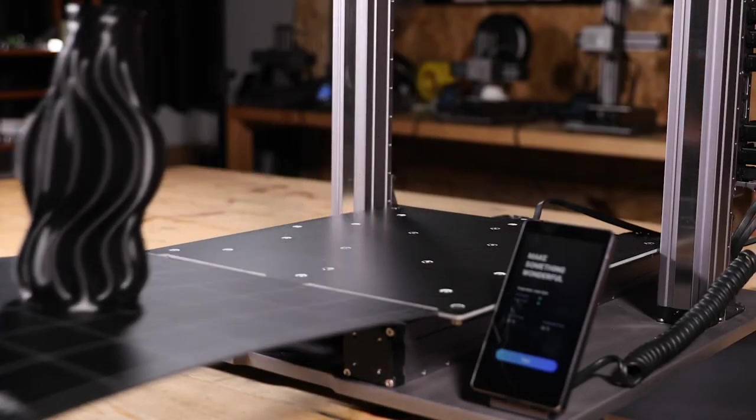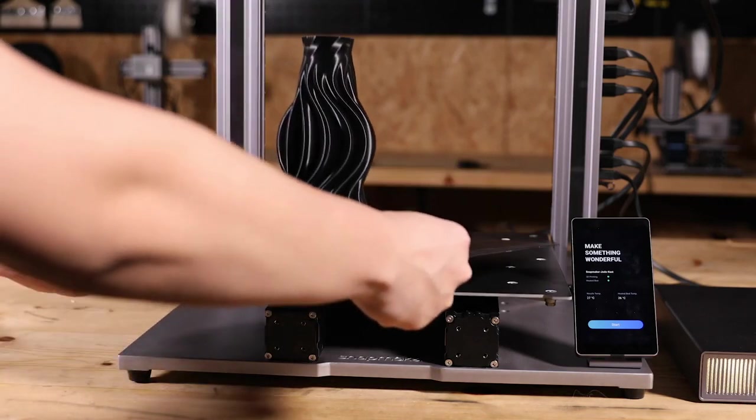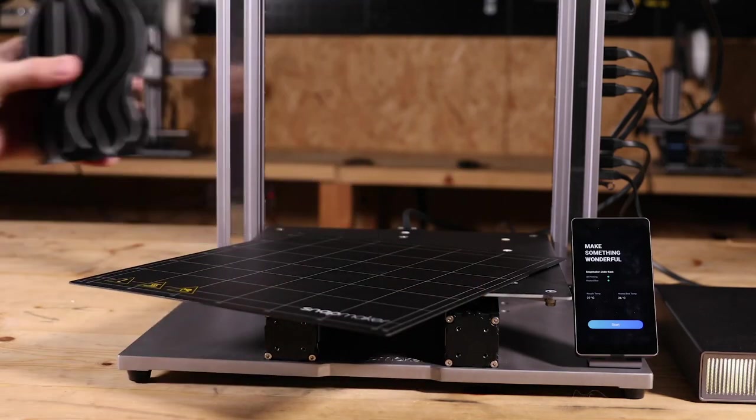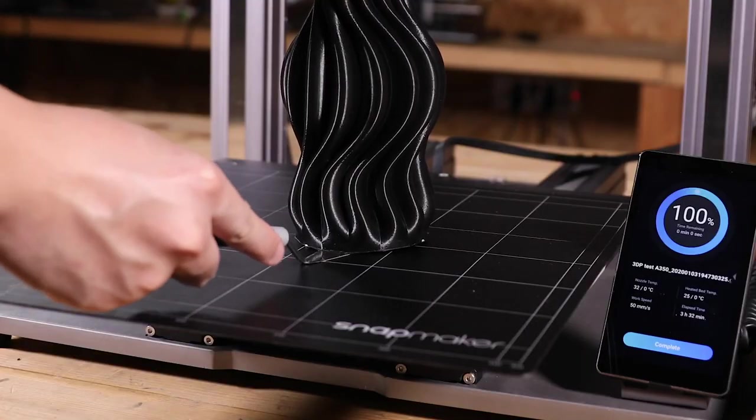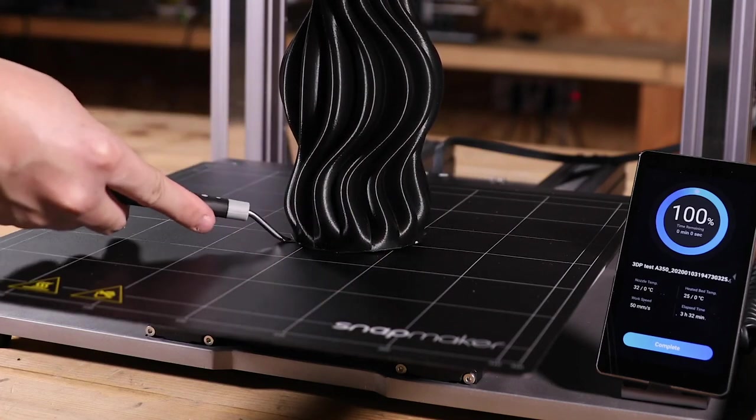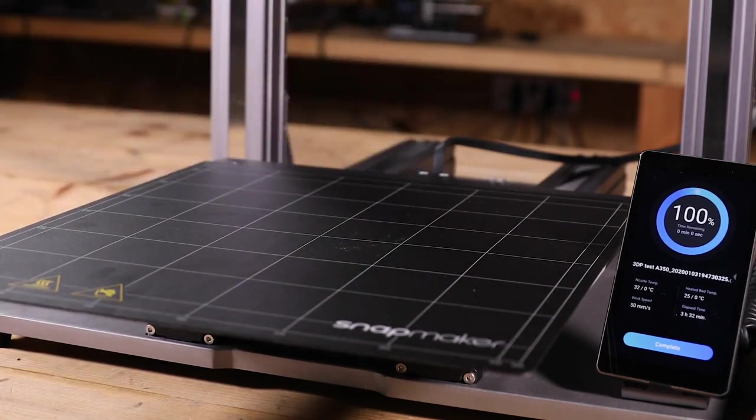Finally, detach the print sheet and bend it slightly outward to remove the print. You can also insert the pallet knife between the print sheet and the print. Pry it gently to complete your removal.